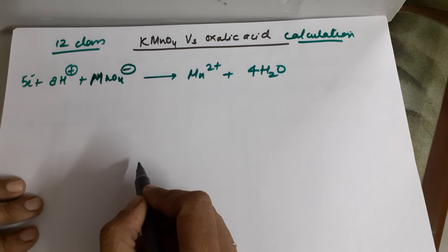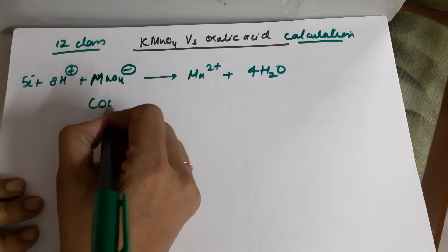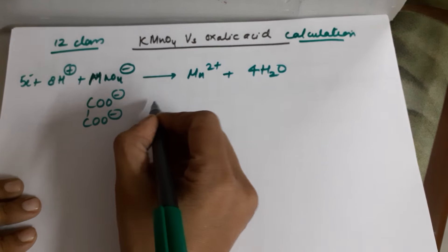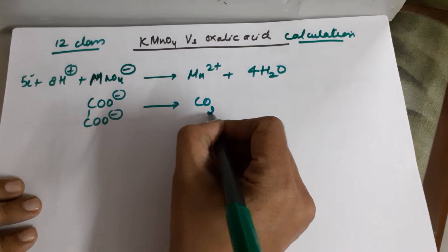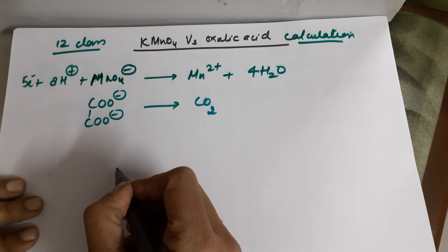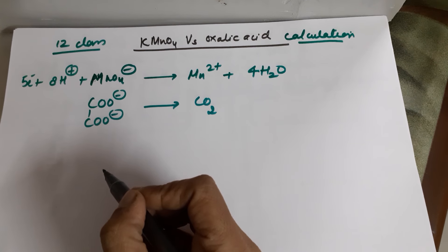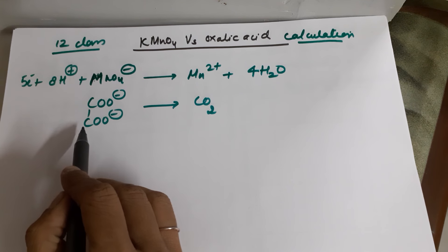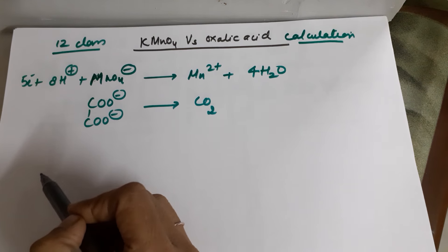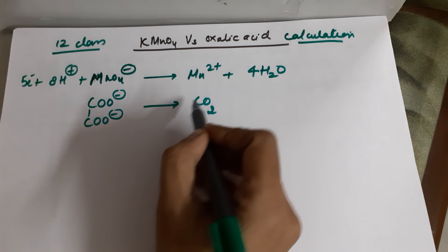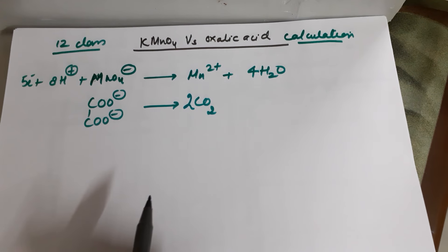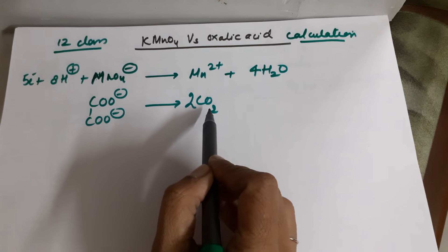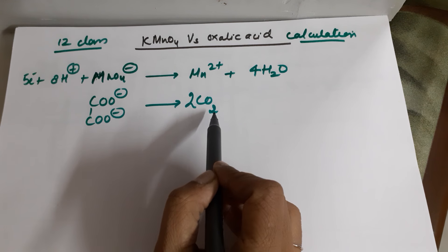Coming to the oxalic acid — the reactive part in oxalic acid is the oxalate ions. These oxalate ions transform into CO2 during the titration. Before balancing oxygen and hydrogen, you need to balance all other atoms. The other atom is carbon. How many carbons do I have? 2. So there is only 1 CO2, so I put a 2 here. Coming to oxygen: how many oxygens? 4. How many here? 4. So it is balanced.